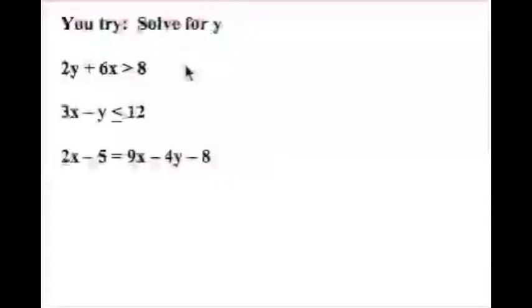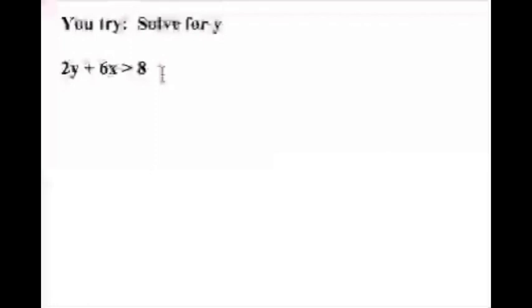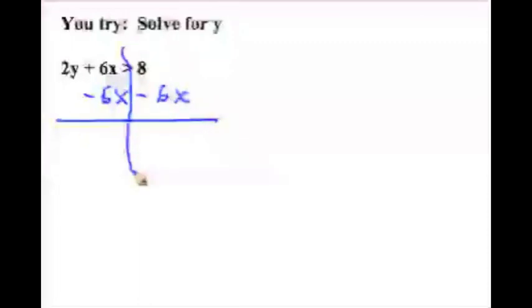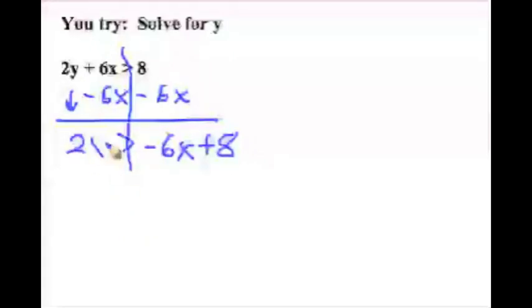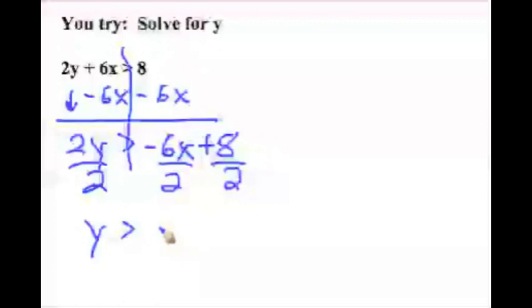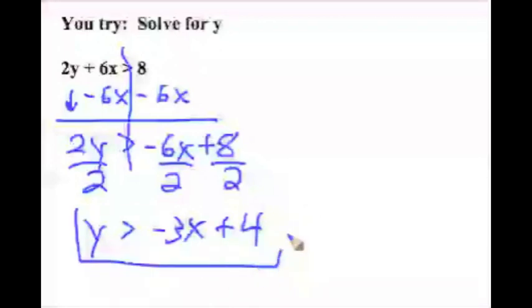Here are three problems for you to try on your own. Go ahead and pause the video, work them out, and press play when you're ready to see the answer. For the first problem, we're getting y by itself. There's a plus 6x, so we subtract 6x from both sides, bringing down the greater-than symbol, leaving negative 6x plus 8 on the right side. We bring down 2y, then divide everything by 2. That leaves us with y is greater than negative 3x plus 4.